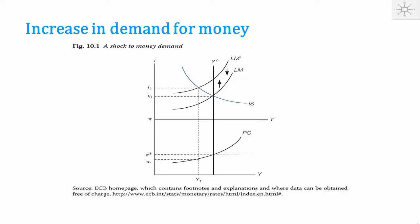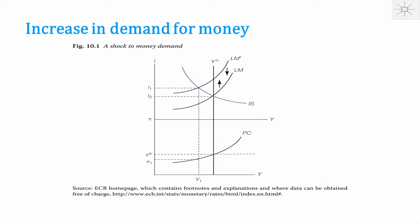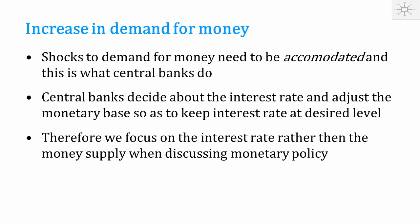So we increase the money supply so as to keep the interest rate constant. We learn from this that if there is a shock to the demand for money, those shocks need to be accommodated — if there is an exogenous increase in the demand for money, you increase the money supply; if there is an exogenous decrease, you reduce the money supply. This is, in fact, what all central banks do in practice.